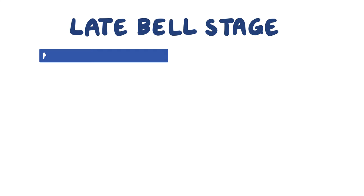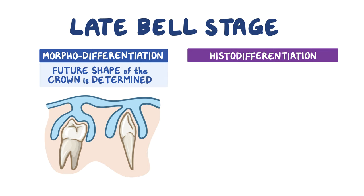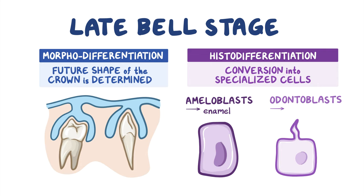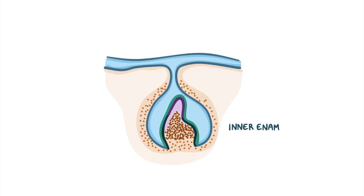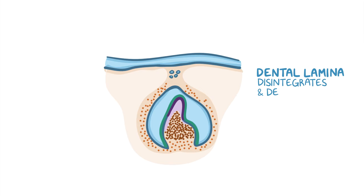The late bell stage is when morphodifferentiation occurs, where the future shape of the crown — incisive, canine, premolar, or molar — is determined. It also marks an important stage of histodifferentiation: the conversion of cells of the dental organ into specialized cells such as ameloblasts, which produce enamel, and odontoblasts, which produce dentin. Following cusp formation, the inner enamel epithelial cells and dental papilla cells continue differentiating into ameloblasts and odontoblasts respectively, down the slope of the cusp and up to the cervical loop. As ameloblasts and odontoblasts secrete the mineralized matrix, the dental lamina disintegrates, completely detaching the tooth germ from the oral epithelium. Sometimes, when the dental lamina degenerates, it may leave behind nests of epithelial cells called epithelial pearls, which can give rise to various abnormalities.